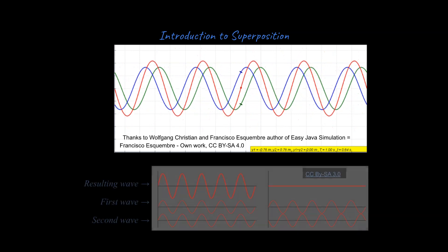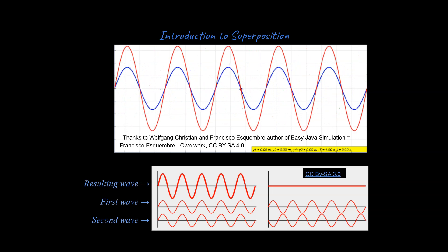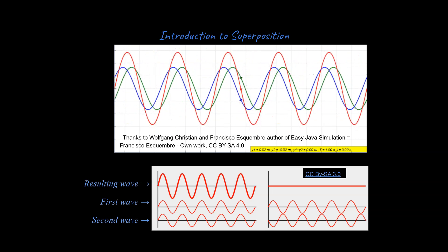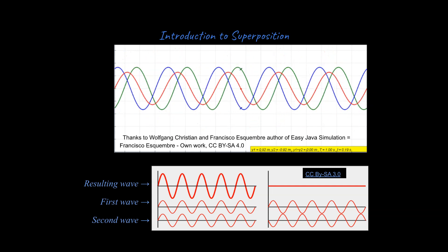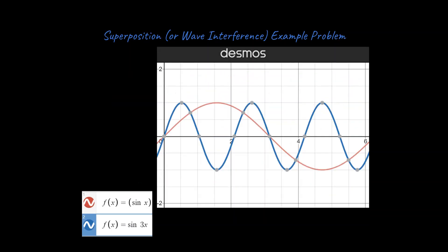The resulting wave is going to be completely constructive when the crests from each wave line up and the troughs from each wave line up, as you see in the image on the left. And it's going to be completely destructive when the crests and the troughs line up at exactly the same time, as you see in the image on the right. All right, so let's continue.